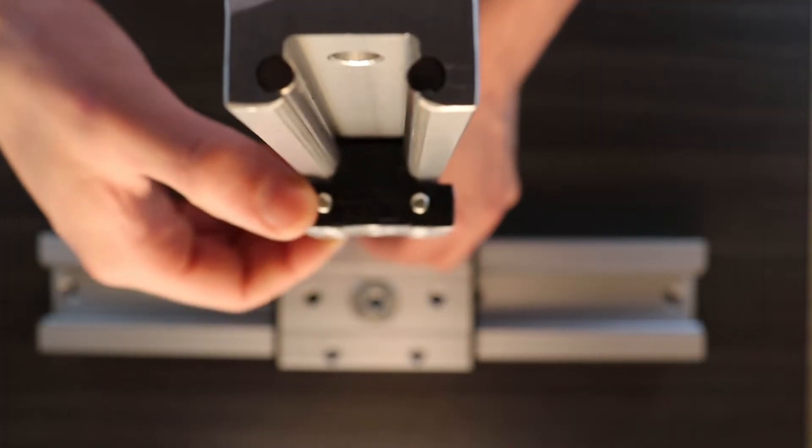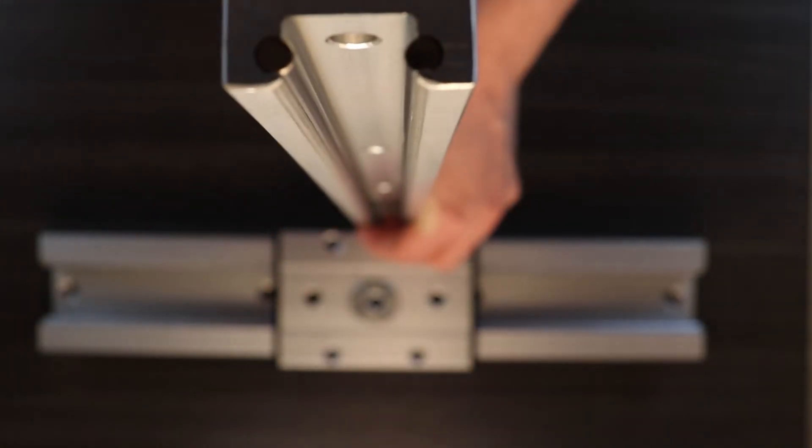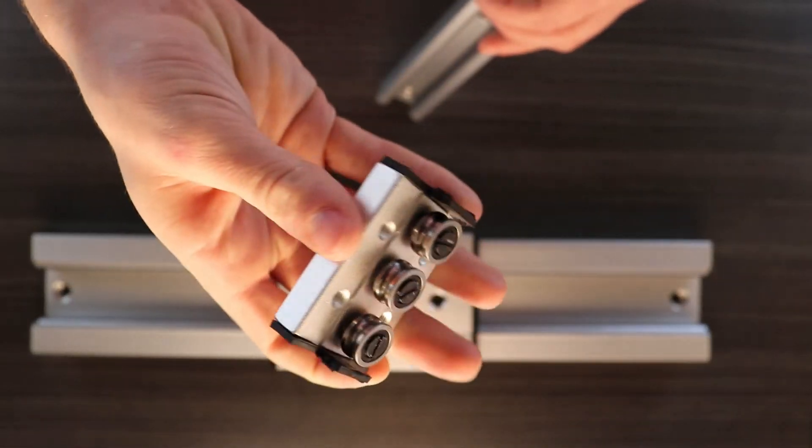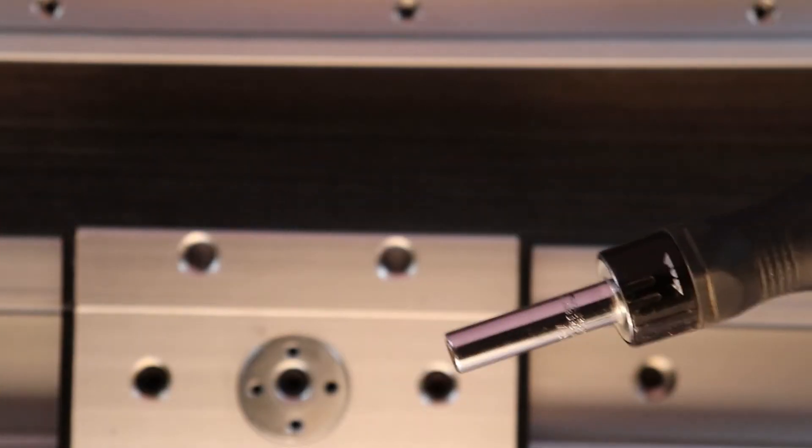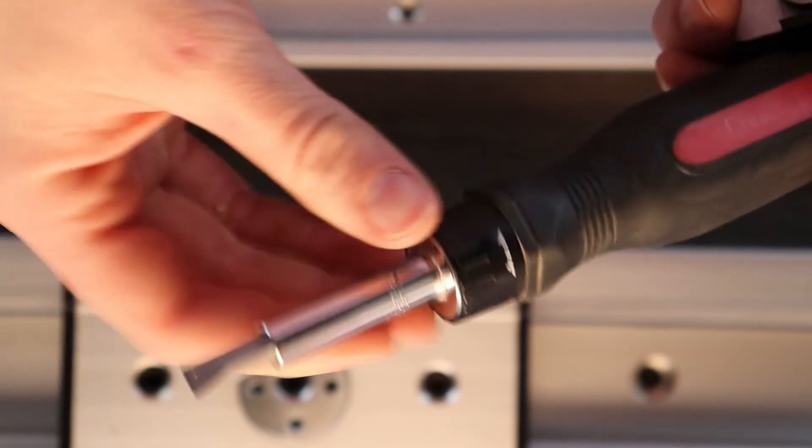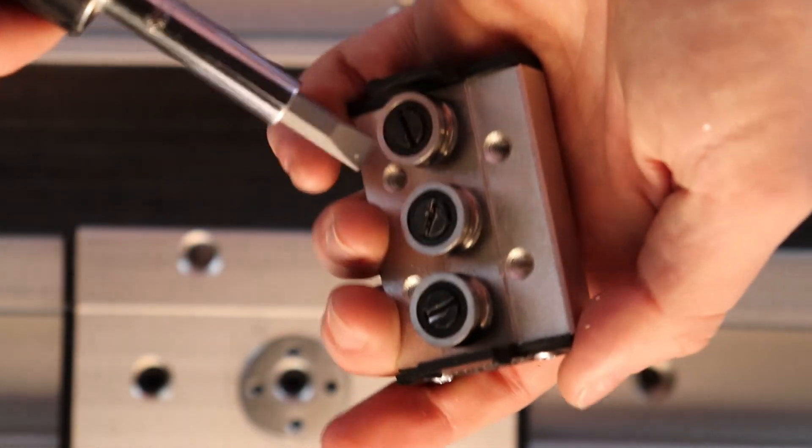Almost the exact same steps can be repeated for this smaller slide carriage. The only difference is the use of a slotted screwdriver not an allen key to remove the bolt.